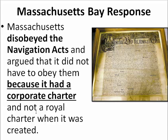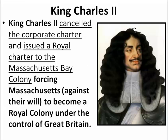Massachusetts maintained they were not a royal charter but a corporate charter. King Charles II reacted by taking that corporate charter and canceling it — tearing it up, declaring it no good anymore. That is the 'loss' part: when King Charles II canceled the corporate charter, that is where Massachusetts lost its charter. Then King Charles II reissued a royal charter to Massachusetts Bay Colony, forcing the colony against its will to become a royal colony under the control of Great Britain.